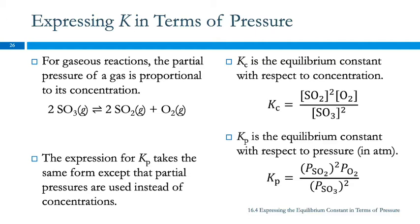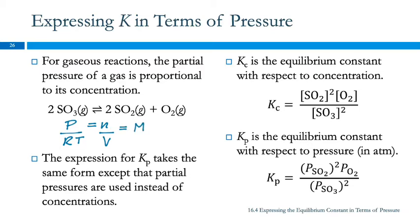If we look at the ideal gas law, PV is equal to nRT. If we rearrange this — bring the V down and take the RT over — we have P over RT is equal to n over V, which is molarity. So we can convert between pressure and molarity; we just have to know the temperature.